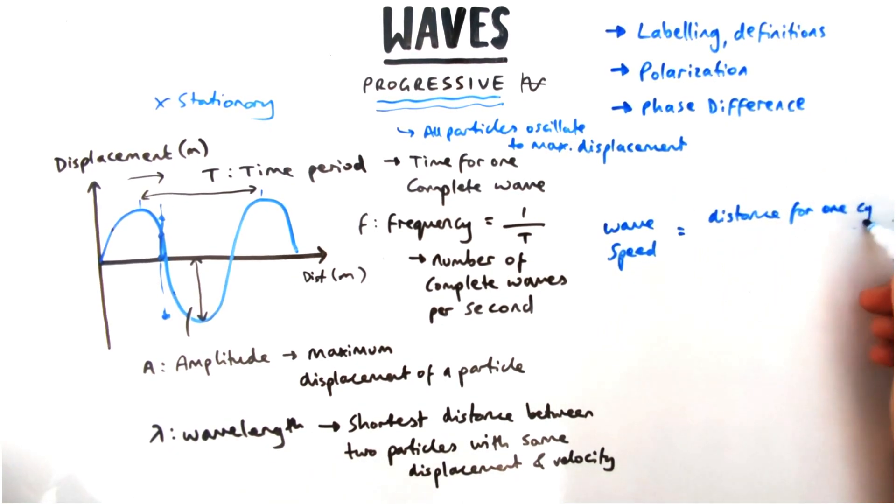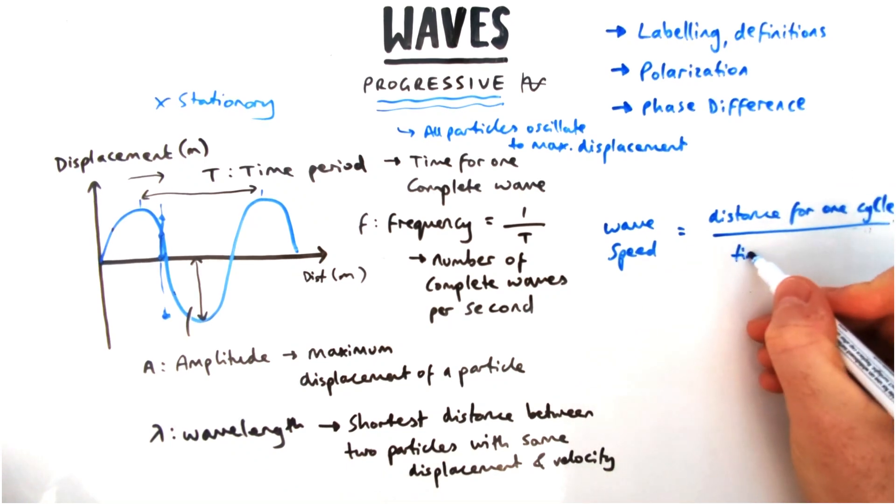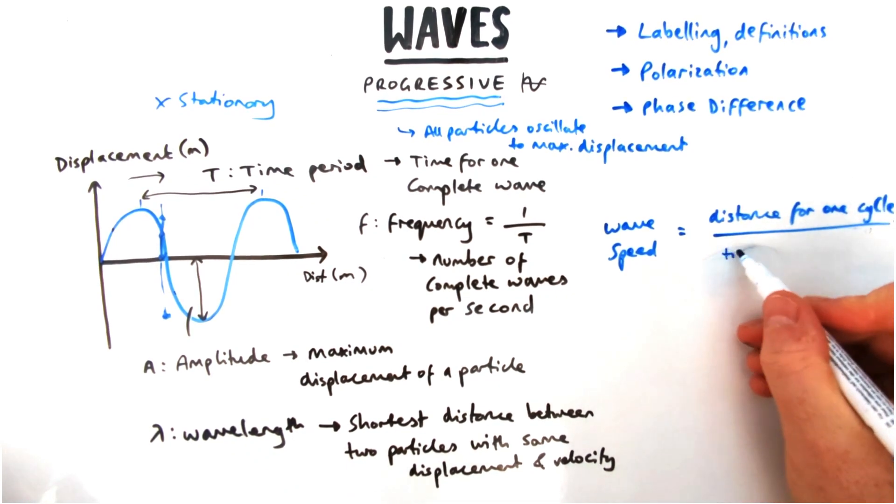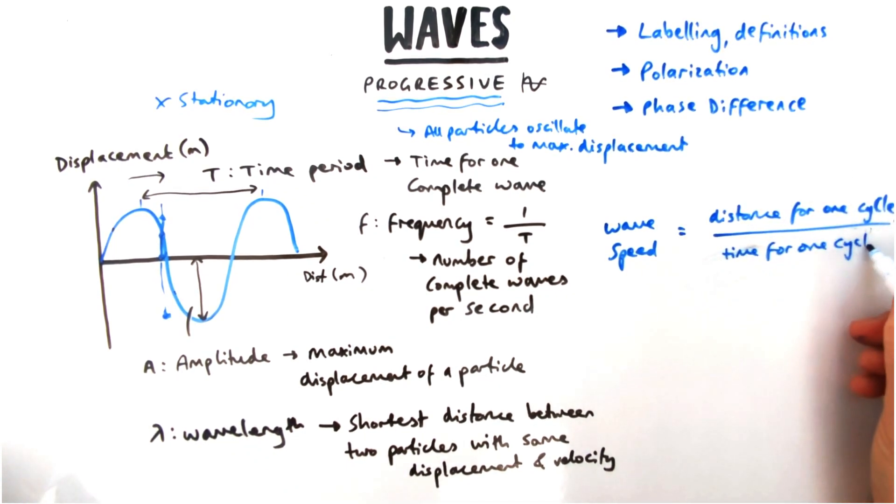Next, let's look at the wave speed equation. The general equation for speed is equal to distance divided by time. We're going to talk about just one cycle and the distance and the time taken for that one wave cycle to take place.